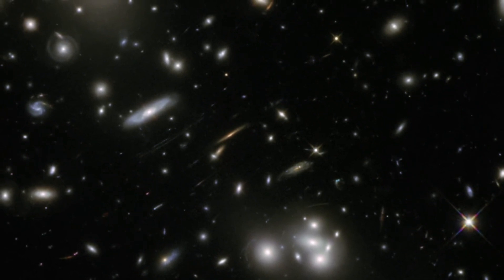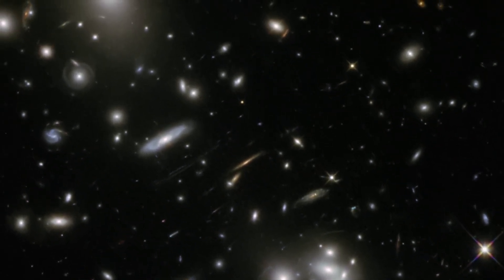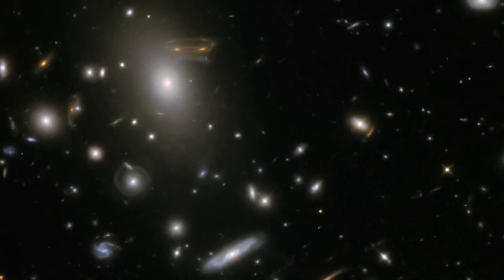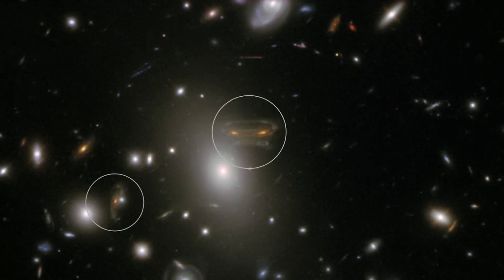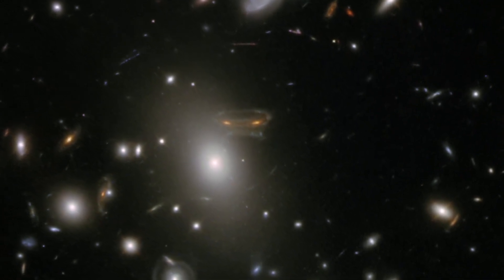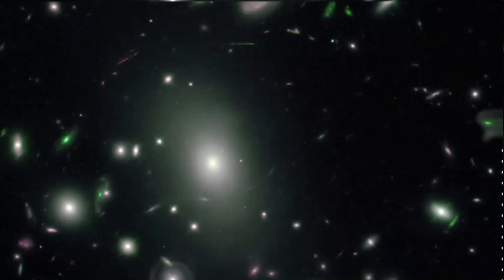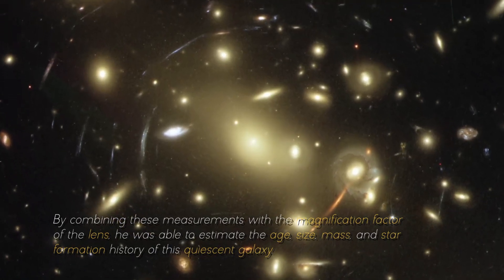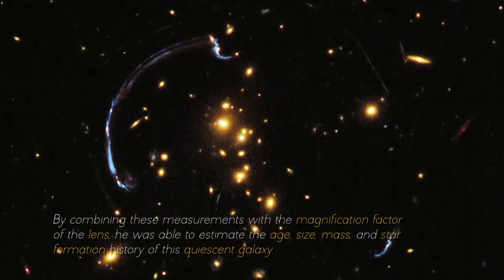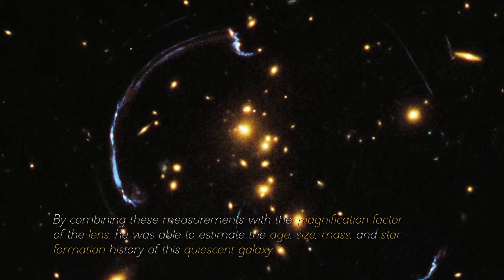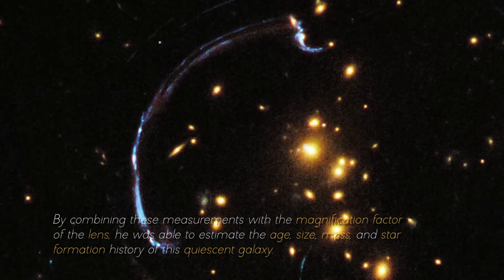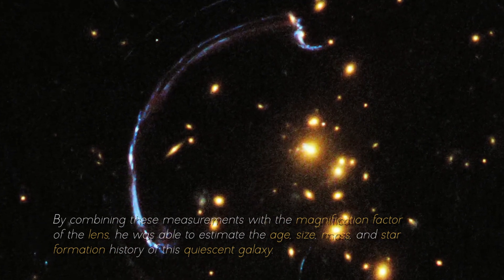Using the NIRCam instrument, James Webb was able to resolve the Einstein ring into multiple images of the quiescent galaxy, and measure its brightness and color in several wavelength bands. By combining these measurements with the magnification factor of the lens, he was able to estimate the age, size, mass, and star formation history of this quiescent galaxy.